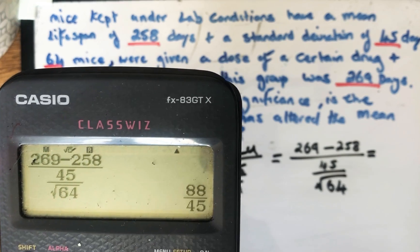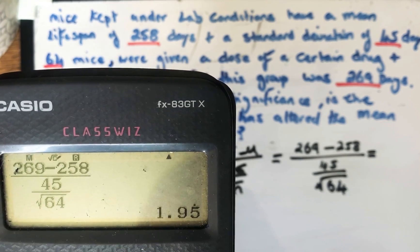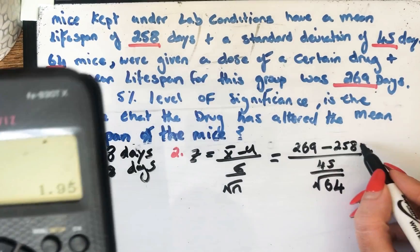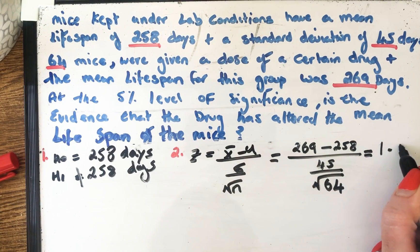Press the equals button and then press the SD button and we get Z is 1.95. So here we go, 1.95.